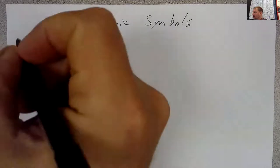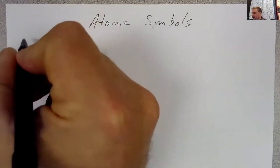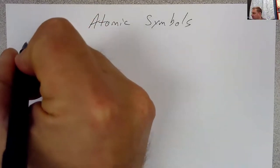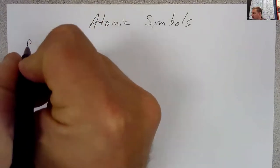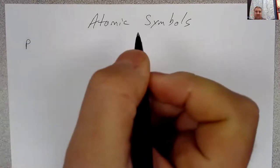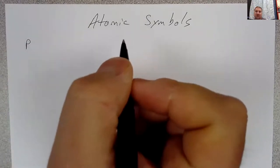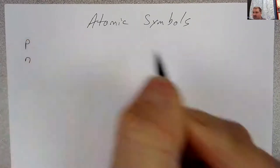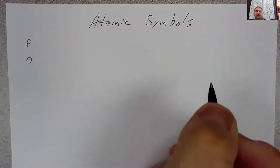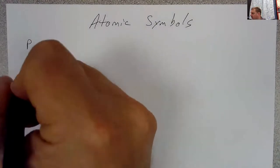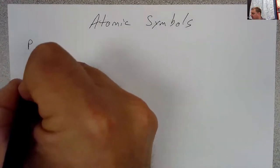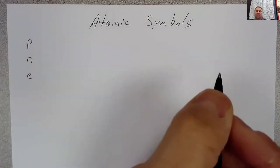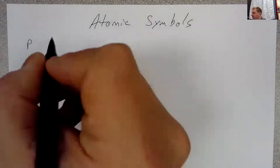One of the first things to know for atomic symbols is that atoms are made of three types of particles. We have protons and neutrons which exist in the nucleus. We also have electrons which exist along the outside of the atom.